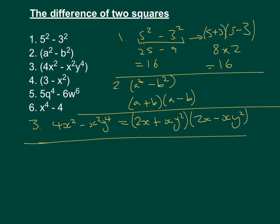Let's look at number 4. We have 3 - x². Now with this one, we don't have a square number here. 3 is not a square number, but it doesn't matter because we can still use the square root of it. So the square root of 3 is just √3, and then we're going to do plus the square root of x², which is x, and then the square root of 3 minus x.